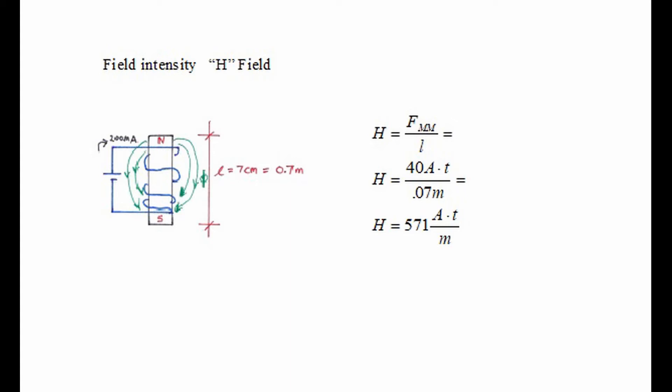The field intensity is called the H field and it depends on length because the longer the lines of force have to travel from north to south, we lose intensity. We can calculate the field intensity by saying that H equals magnetomotive force divided by length. In this case, 40 amp turns divided by 0.7 meters equals 571 amp turns per meter. Some books use different names for these things but we're going to call it amp turns per meter.